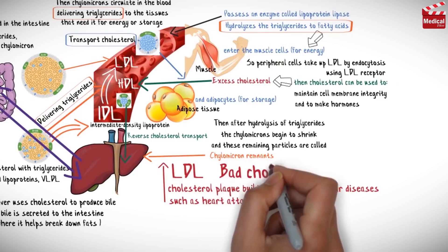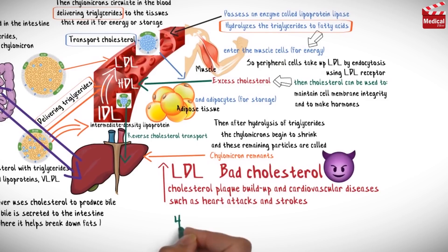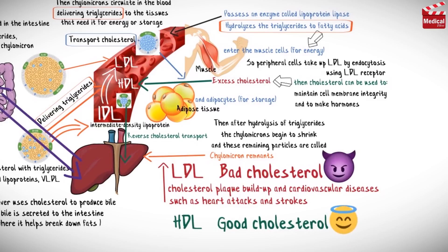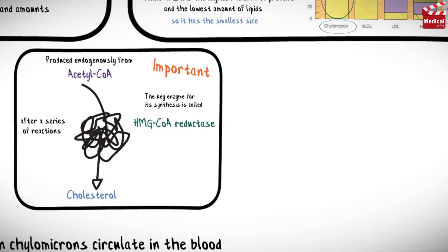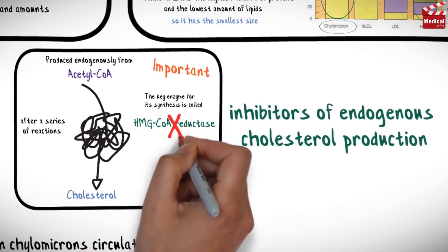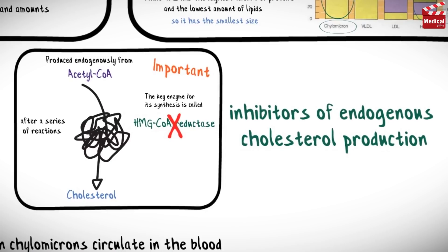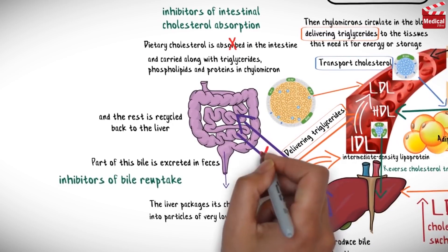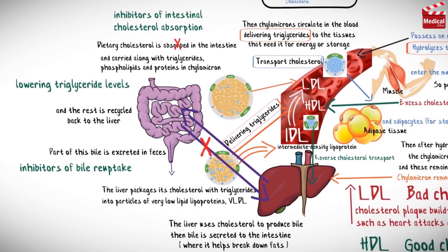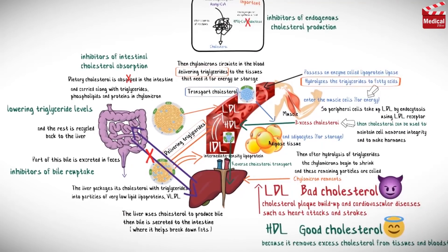LDL is known as bad cholesterol. On the other hand, HDL is called good cholesterol because it removes excess cholesterol from tissues and the bloodstream. Now we can conclude the mechanisms of the drugs used for hyperlipidemia: inhibitors of endogenous cholesterol production (which inhibit HMG-CoA reductase), inhibitors of intestinal cholesterol absorption, inhibitors of bile reuptake, and agents for lowering triglyceride levels. Other types and details will be discussed in upcoming lectures.